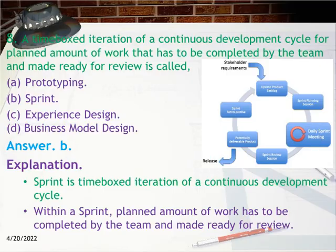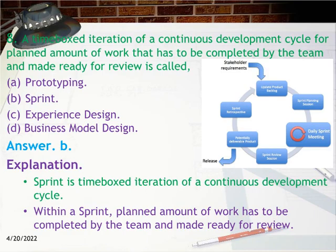Question 8: A time-boxed iteration of a continuous development cycle for a planned amount of work that has to be completed by the team and made ready for review is called — A. Prototyping, B. Sprint, C. Experience design, D. Business model design. Answer: B. Sprint. Explanation: Sprint is a time-boxed iteration of a continuous development cycle. Within a sprint, a planned amount of work has to be completed by the team and made ready for review.